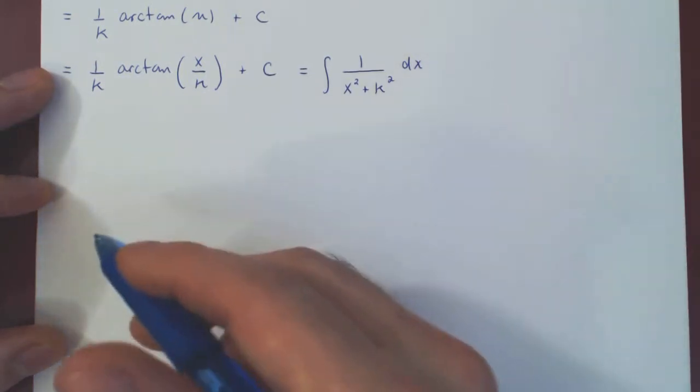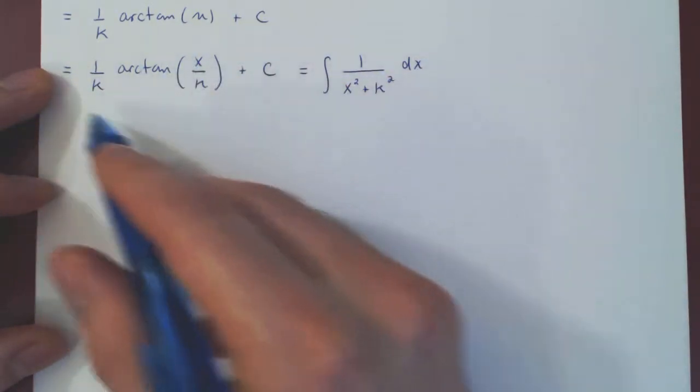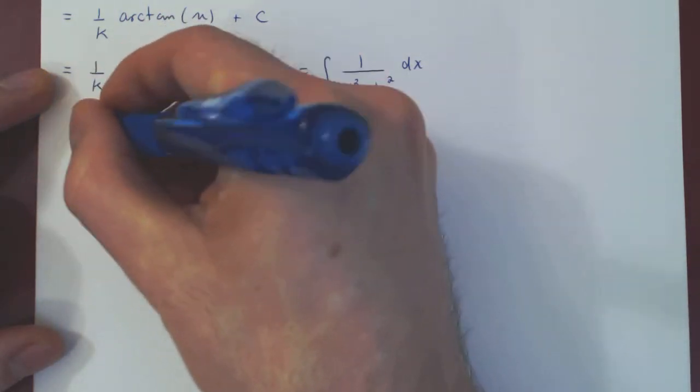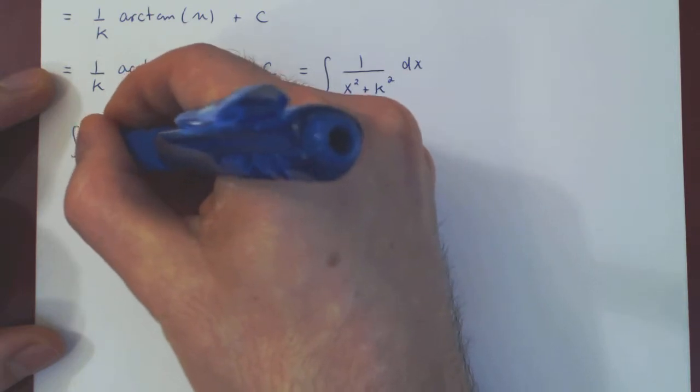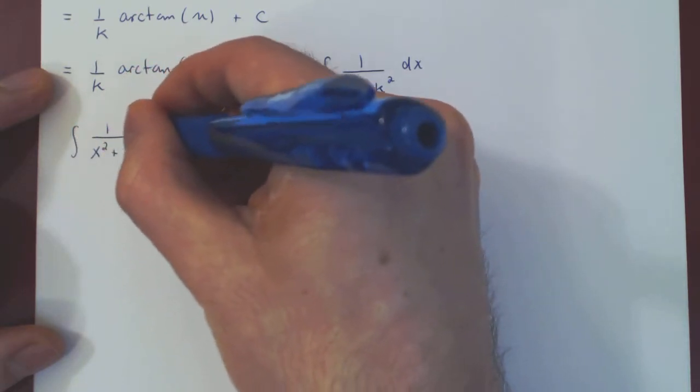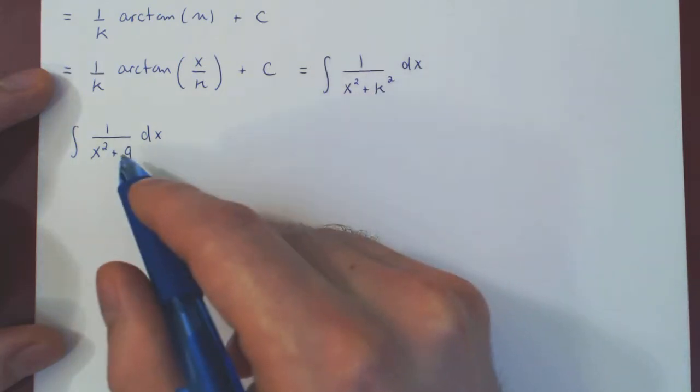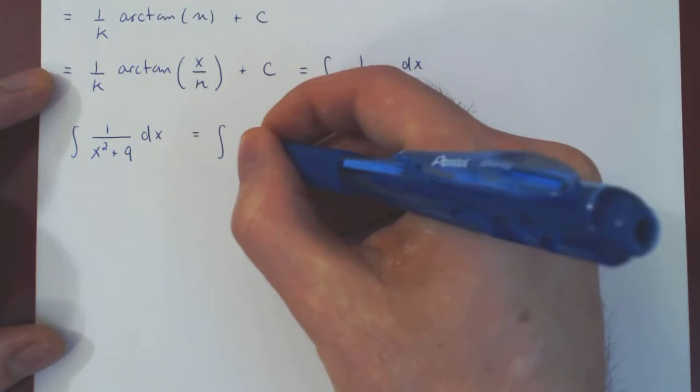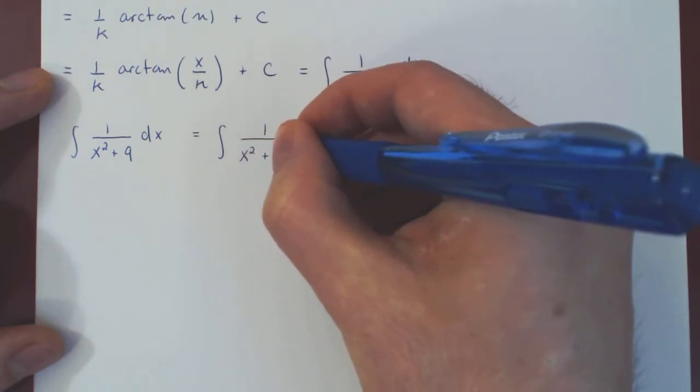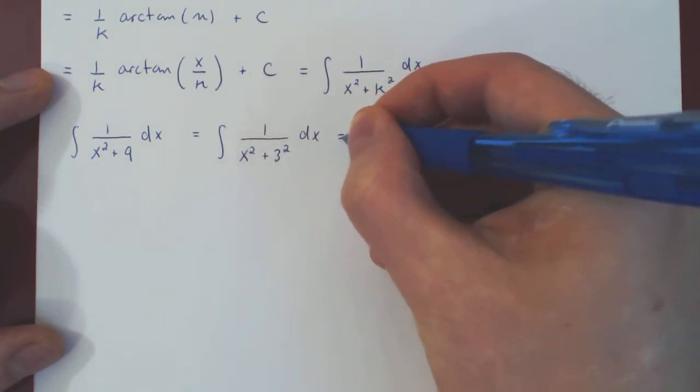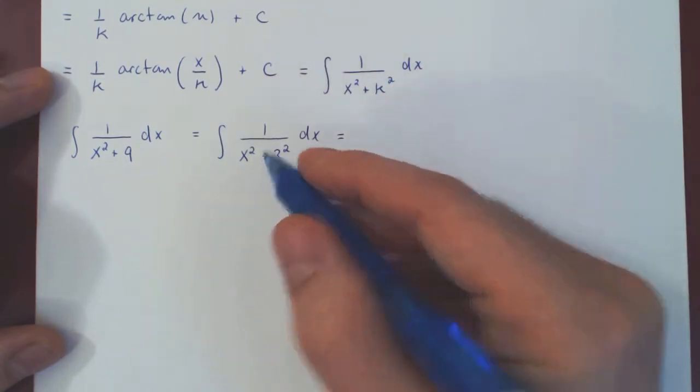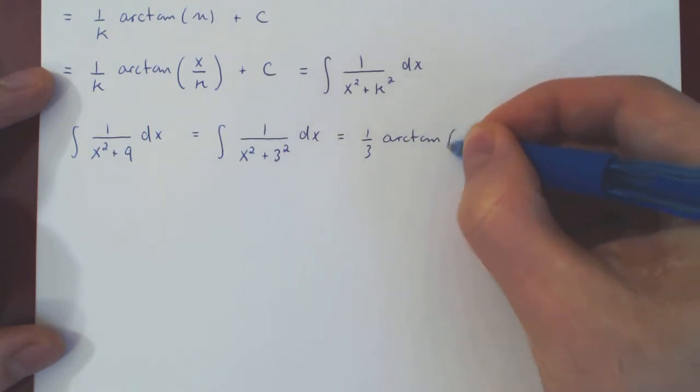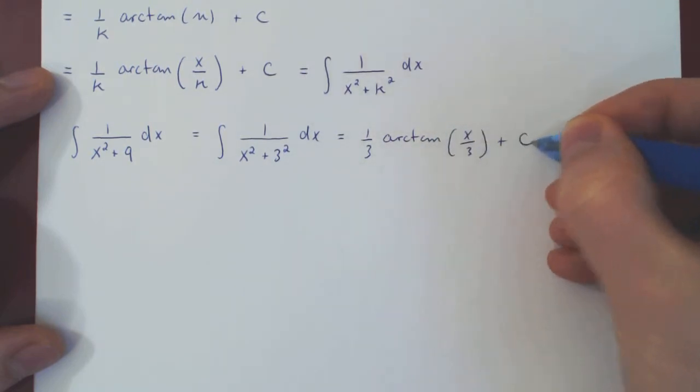Let's look at two very straightforward examples that are exactly in this form. So what if I ask for the integral of 1 over x squared plus 9 dx? Well, I need this to be a k squared, so of course I simply have to rewrite 9 as 3 squared. And so here the value of k is 3. And so all I get is 1 over 3 times the arctangent of x over 3 plus c.